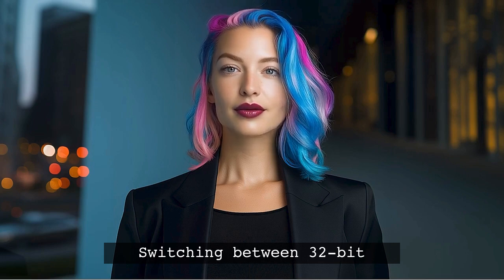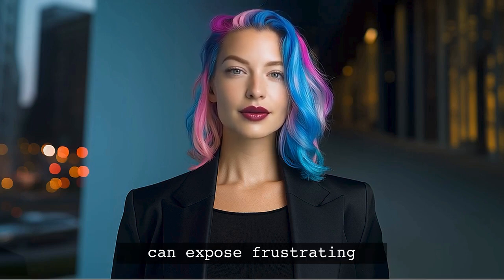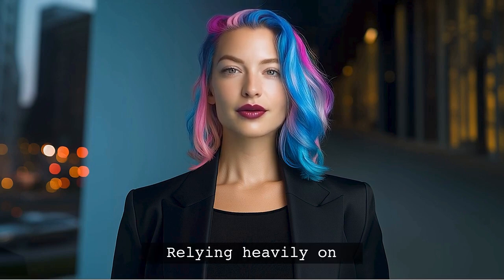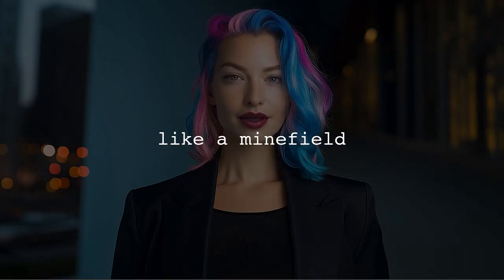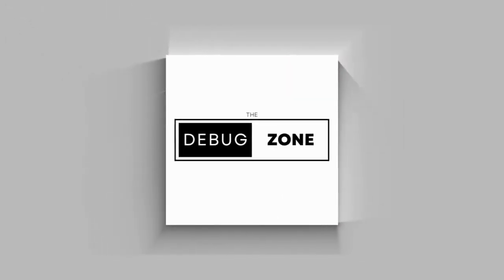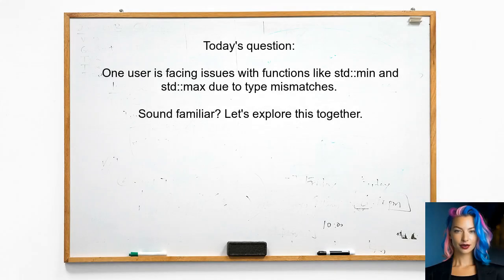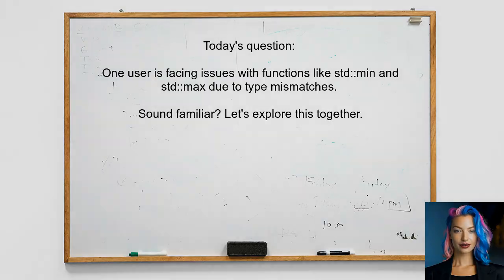Switching between 32-bit and 64-bit systems can expose some frustrating issues, especially when you're relying heavily on vectors and strings. It can feel like a minefield of errors. Here's the specific question we're addressing today: one user is facing issues with functions like std::min and std::max due to type mismatches between unsigned integers and vector size types. Let's explore this together.